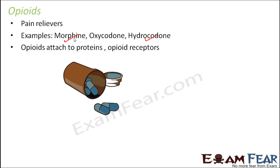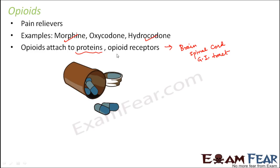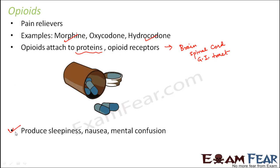These opioids attach to proteins called opioid receptors, present in the brain, spinal cord, and gastrointestinal tract. If taken as prescribed, they are very effective as pain relievers. But if a heavy dose is taken or taken regularly, it can cause severe problems — like respiratory depression, where the respiration rate might decrease a lot, which can even cause death. Regular and frequent use of opioids can cause addiction, producing sleepiness, nausea, and mental confusion.